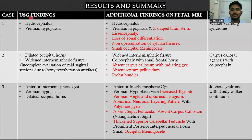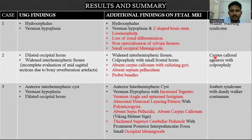As a summary, there are five cases. Case one, Walker-Warburg syndrome: on USG we found only hydrocephalus and vermian hypoplasia. Additional findings on MRI include microcephaly, non-operculation of sylvian fissures, small occipital meningocele, and loss of zonal differentiation. In case two, corpus callosal agenesis: in addition to dilated occipital horns on USG, MRI revealed absent corpus callosum, absent septum pellucidum, and gyral abnormalities.